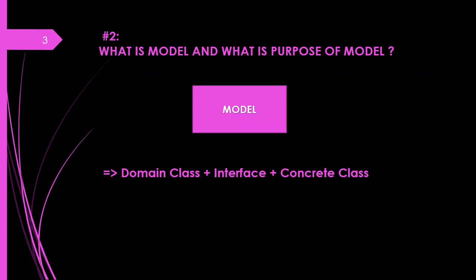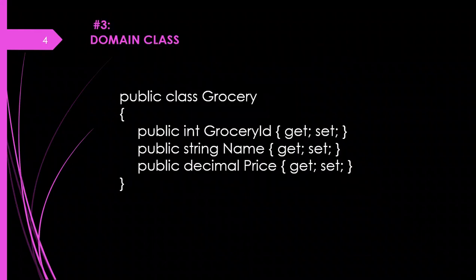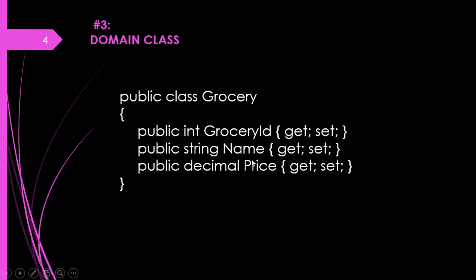Next, let's understand what is a domain class. In this example, there is a domain class called Grocery. This Grocery class consists of GroceryID, Name, and Price. These three properties are defined inside a class, which makes it a domain class. But just this class alone will not make a model.